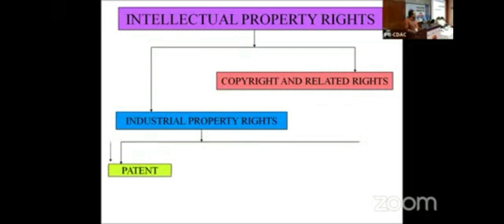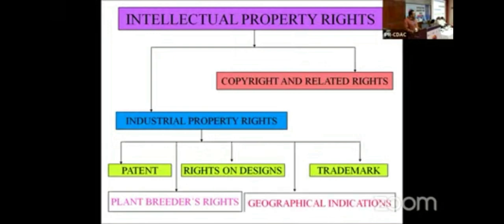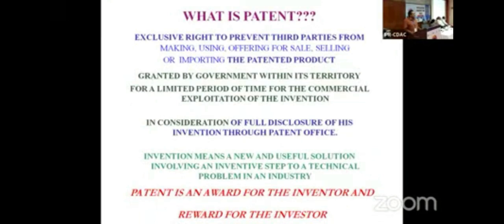Coming to patents — patent is supposed to be the most useful and most dangerous kind of IPR. It is our job to ensure it does not become dangerous. Patent gives an exclusive right to prevent third parties from making, using, selling, or offering for sale a patented invention. Even stocking a product in the market for sale constitutes patent infringement.